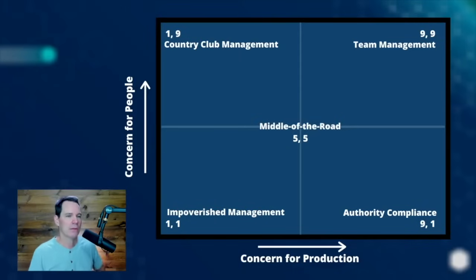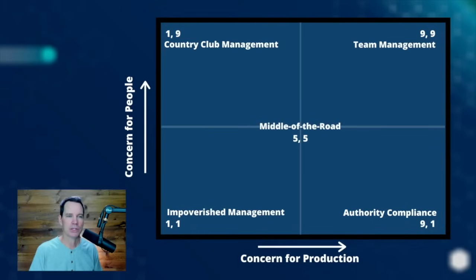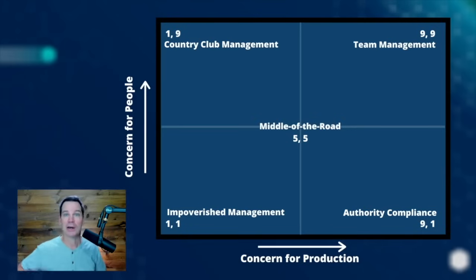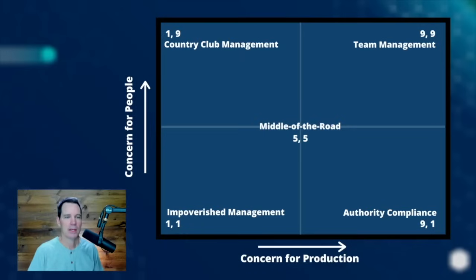The country club manager thinks that by investing in relationships, that is one of the better ways to get beneficial production outcomes. And then we have the team management approach — the highest score — where the leader is really working with the team as a team member, showing high concern for both people and production in a real collaborative atmosphere. The managerial grid became the foundation for some other leadership models that came after it, including Hersey and Blanchard's situational leadership model.